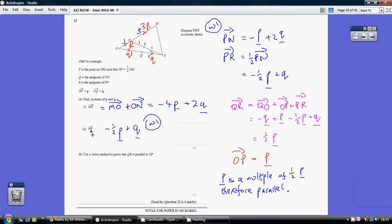Now P to R. P to R is half of P to N. But P to N is minus p plus 2q. PR is half of this, so that's minus a half p plus q.